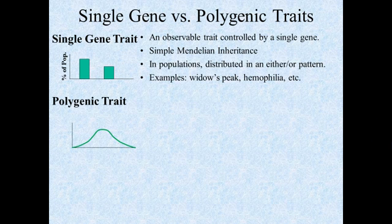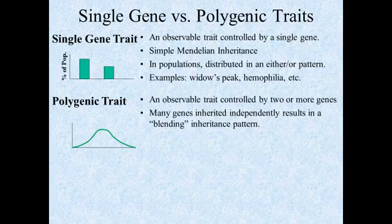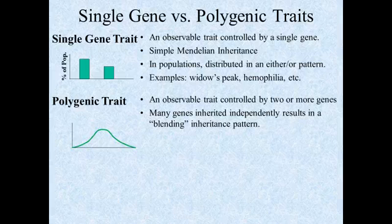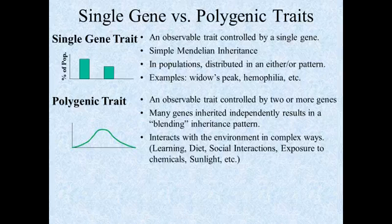That's contrasted with a polygenic trait. Polygenic traits are observable traits that are controlled by two or more genes. They are typically inherited and cause some form of a blending pattern. These are things that interact with the environment in very complex ways — they might be affected by learning, diet, social interactions, and so on.